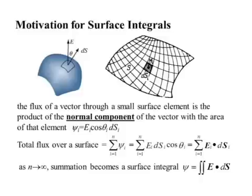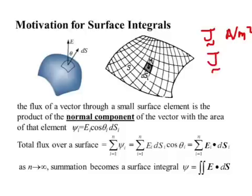For example, we can talk about electric current density J, which has units of amperes per meter squared. It tells you how many amperes are flowing per unit area, and it can vary from one point to another. So if you want to calculate the total current going through a surface, for a very tiny area you take the dot product between J at that point and the unit area.